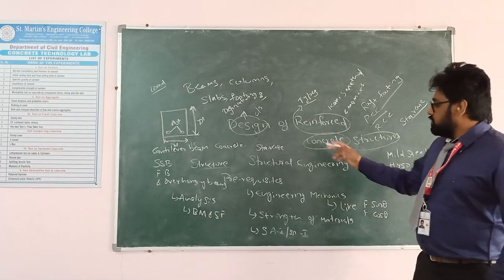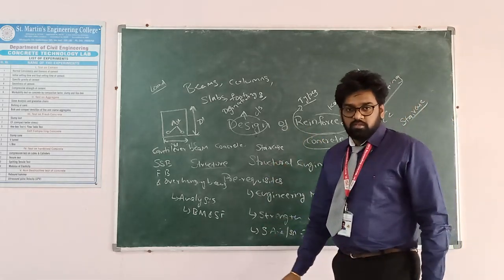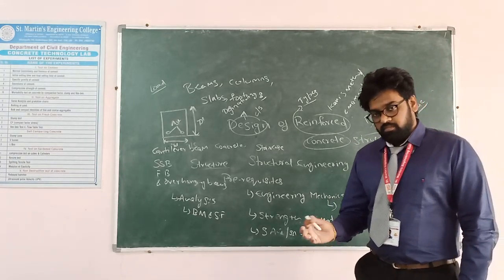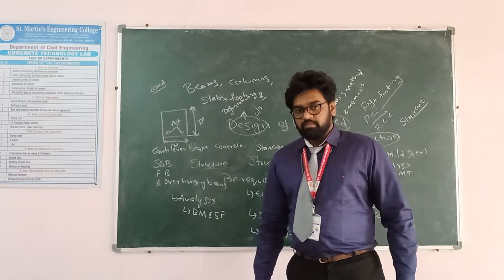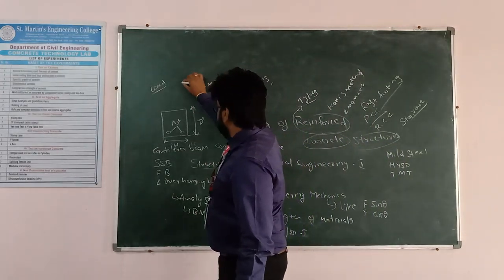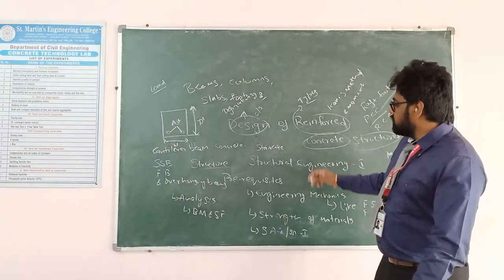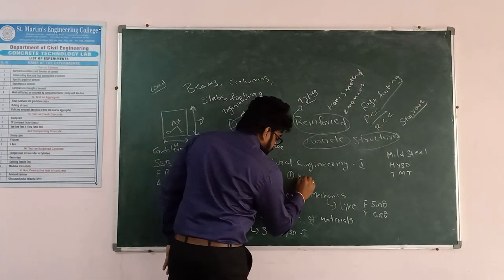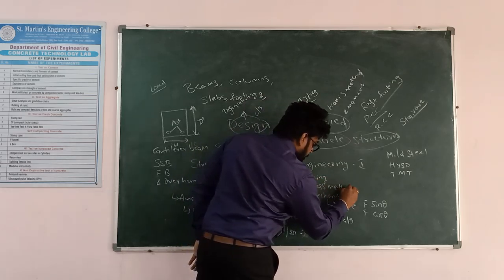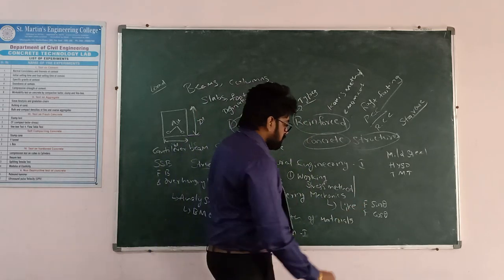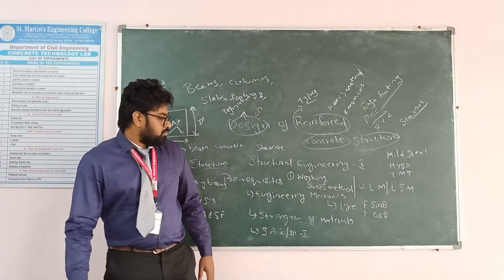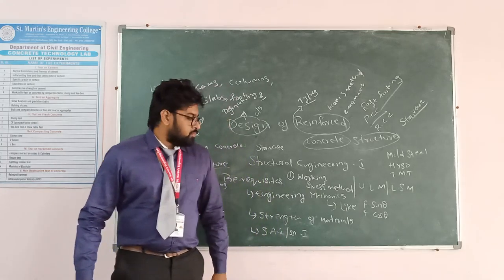In the design of reinforced concrete structures we deal with all these structural elements, arranged so that load can transfer from one member to another without causing failure. To design these structural elements, there are different methods: the first is the working stress method, the second is the ultimate load method, and the third is the limit state method.